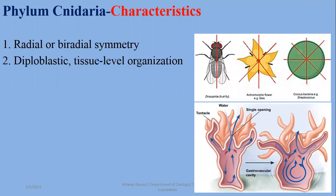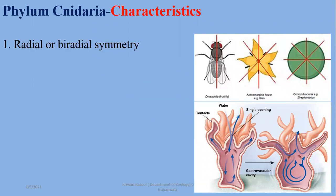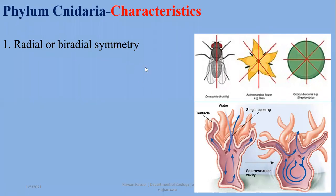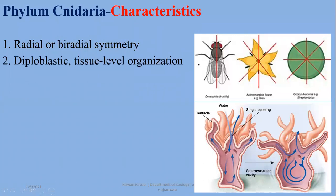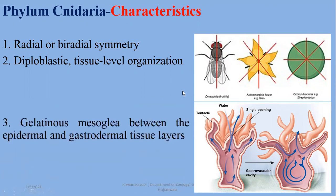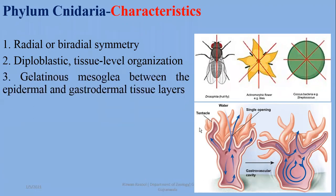Talking about the general characteristics of phylum Cnidaria: they exhibit radial and biradial symmetry. There is also pentaradial symmetry, which we see in starfish or echinoderms, but the symmetry in Cnidarians is specifically radial or biradial. They are diploblastic organisms, having two body layers — ectoderm and endoderm at the embryonic level. Between these layers is a jelly-like material called mesoglea, which is a non-cellular layer.